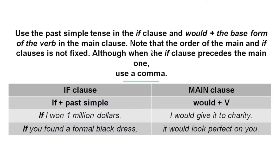Note that the order of the main and if clause is not fixed. Although, when the if clause precedes the main one, make sure to use a comma. Have a look at the table below. The if clause of type 2 conditionals is formed by using 'if' plus past simple, and in the main clause, 'would' plus verb. For example: 'If you found a formal black dress, it would look perfect on you.'